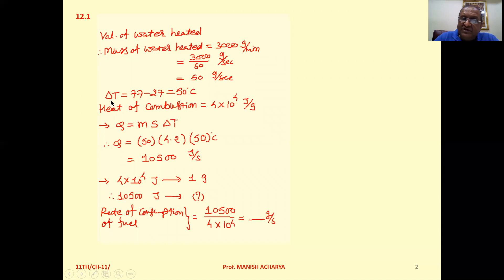Now, temperature is changed from 27 to 77. So delta T that is 50 degrees Celsius. Heat of combustion that is given to you 4 into 10 raised to 4 joules per gram.